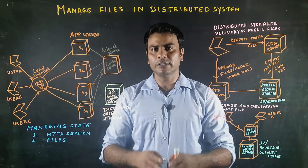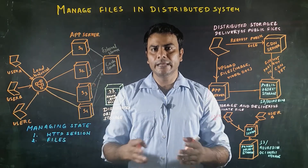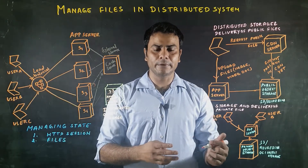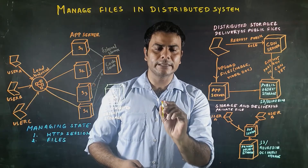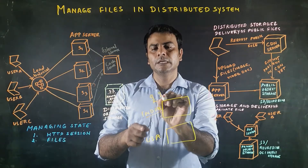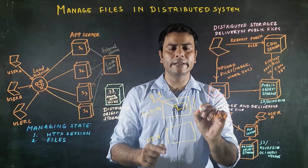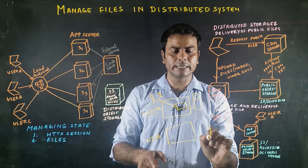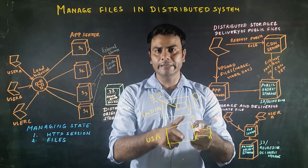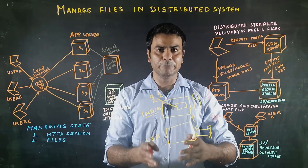If your user base is not geographically distributed, then the S3 server is enough to handle all kinds of loads. But if the user base is distributed globally, S3 alone may not handle all loads efficiently. For example, if users from India upload files and the origin server is located in India, users from the USA may face high latency when accessing those files. In that case, we can use CDN server functionality to improve performance and reduce latency.